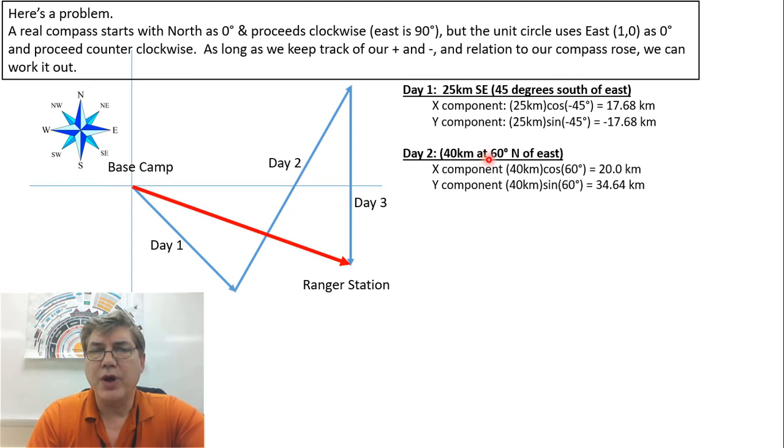Day two, we have 40 kilometers at 60 degrees north of east. So let's call this line here. This is the angle that we're looking at that's 60 degrees. And we get two positive numbers. The cosine of 60 times 40 kilometers is 20, so we go 20 kilometers more in the x direction. And the sine of 60, we go up 34.64 kilometers.